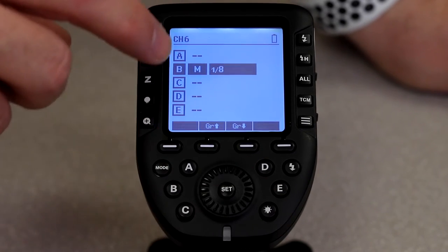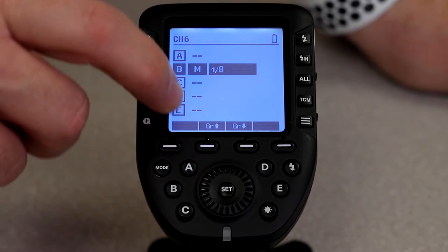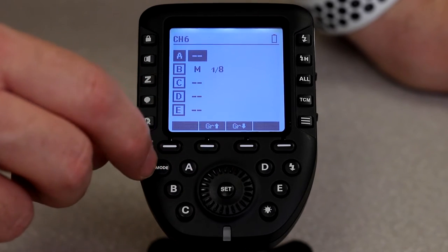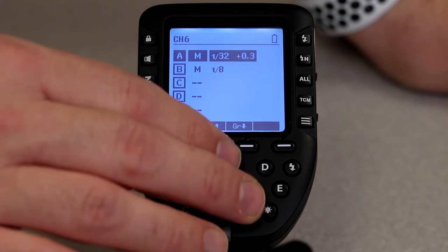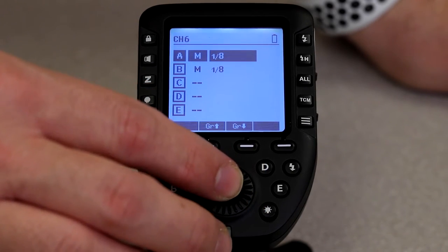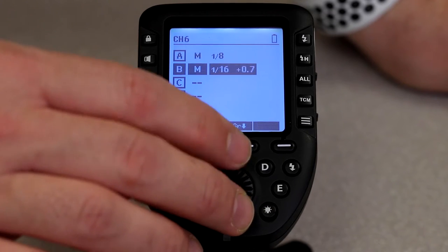But you can control them independently. So I'm going to go in here to A and I'm going to turn it on by hitting mode. And again, you know, A was like my main light, so let's say I need a little more power out of that, and then B is my hair light, I'm going to back it off a little bit.